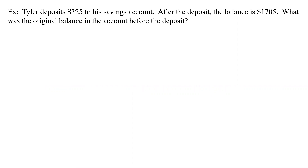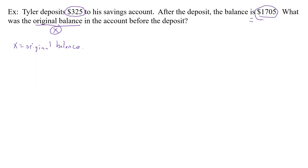Tyler deposits $325 to a savings account. After the deposit, the balance is $1,705. What was the original balance before the deposit? The original balance is unknown, so let's call it x. Depositing means adding — another word for adding is deposit, just as withdrawal means subtracting. We're adding $325 to x, and then the balance is $1,705. So the equation is: x plus $325 equals $1,705.